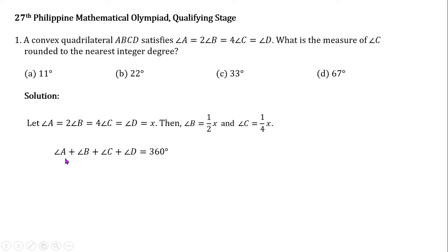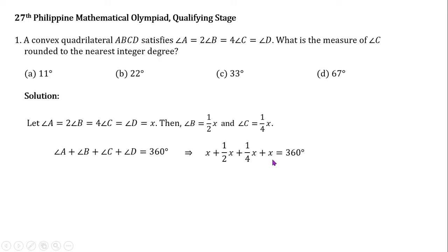We can replace angle A and angle D by x, and angle B and angle C by one half x and one fourth x, respectively. So we obtain the equation x plus one half x plus one fourth x plus x equals 360 degrees. Combining the terms on the left-hand side, we should get 11 over 4 times x equals 360 degrees.